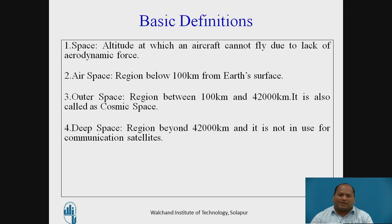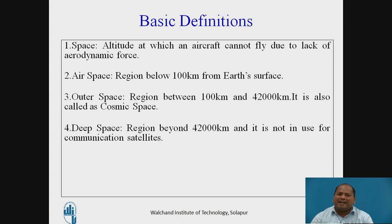Deep space is the region above 42,000 kilometers and it is not used for satellite communication. The cosmic space, that is the outer space, is used for communication satellites especially meant for audio video broadcasting and transmission of messages or video. Deep space is not used for communication satellites; whatever satellites are there apart from communication satellites, they fall under the deep space region.